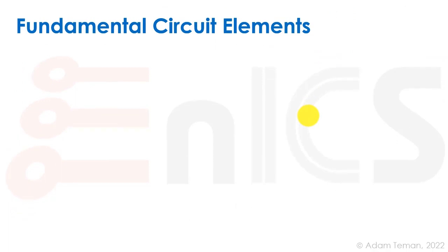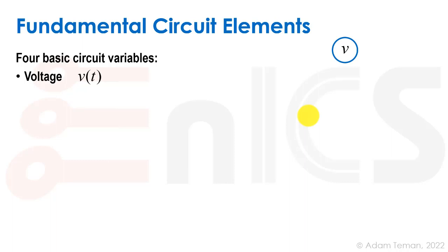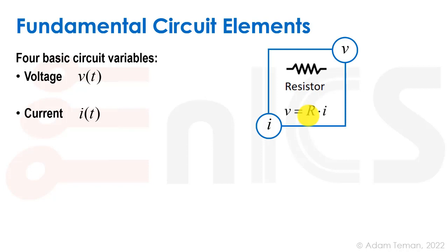Before we start, I want to talk about one of the great breakthroughs of physics in the last several decades. If we look at the four basic circuit variables: we start with voltage V, and our other main variable is current. We have the relationship between voltage and current called Ohm's law — voltage equals some constant times current — and this constant R we call resistance. The element providing this relationship is called a resistor.